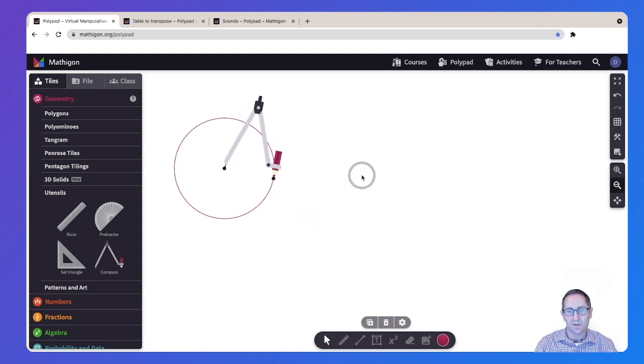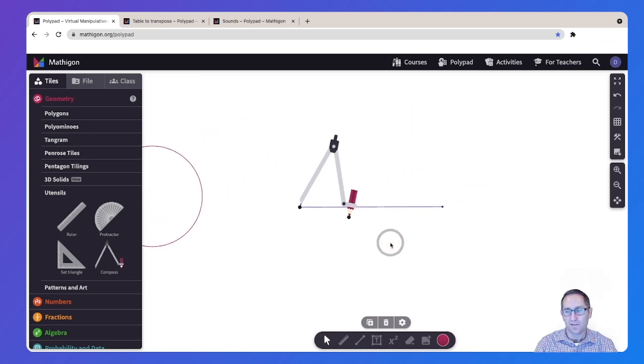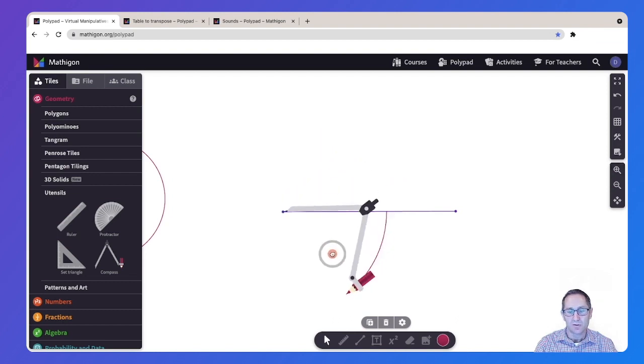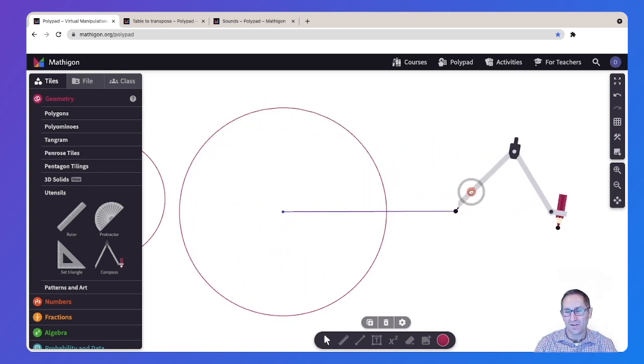Of course, these can be used to construct a number of things in geometry. I'll do one example here. I'll put a line segment on the canvas. Let's say I want to find the midpoint of that line. I'll put the compass on one end of the line and make sure this goes beyond what I would estimate as the midpoint. Draw this circle and then move the compass to the other point on the line. Draw this circle.